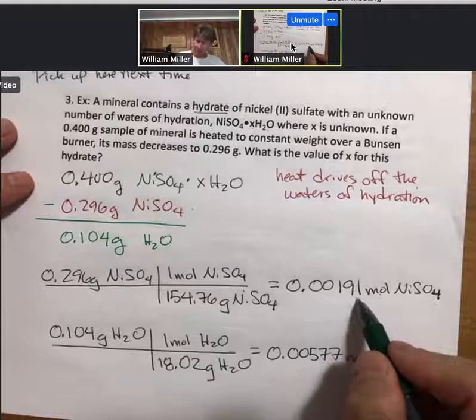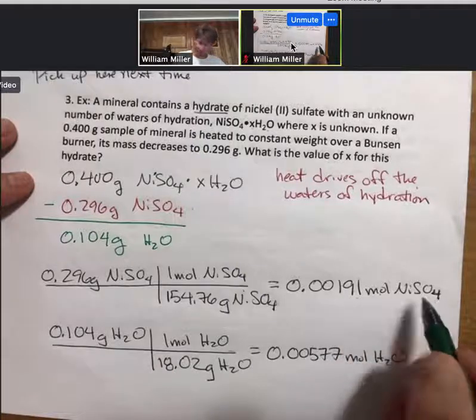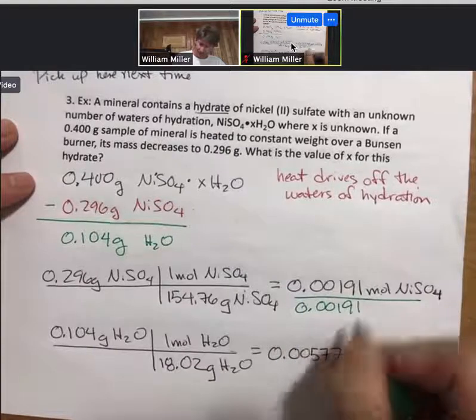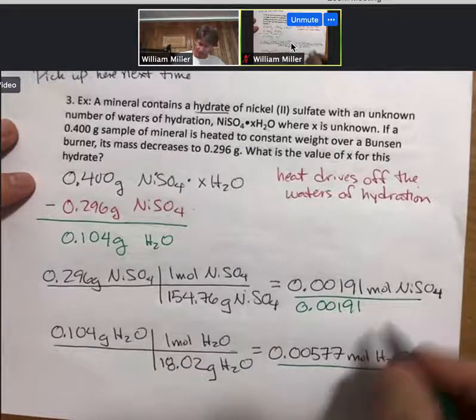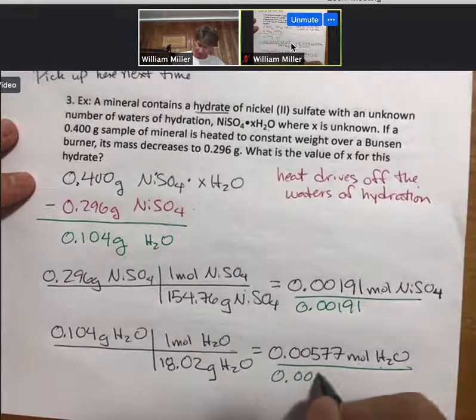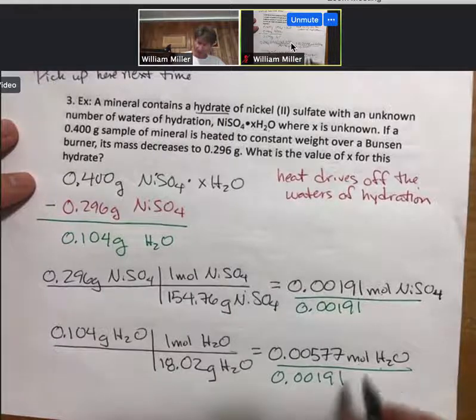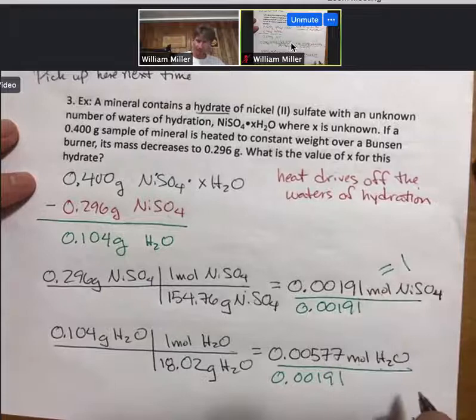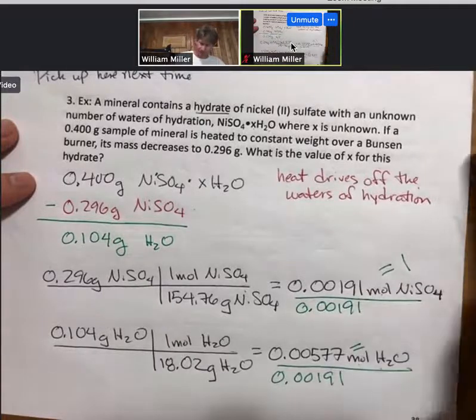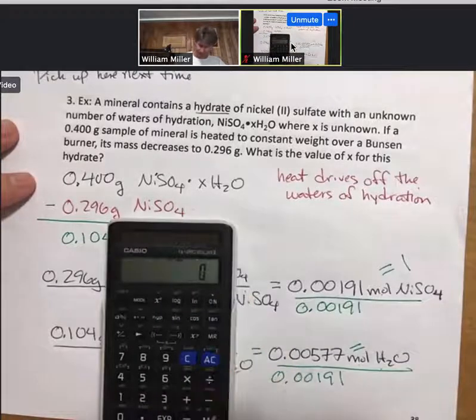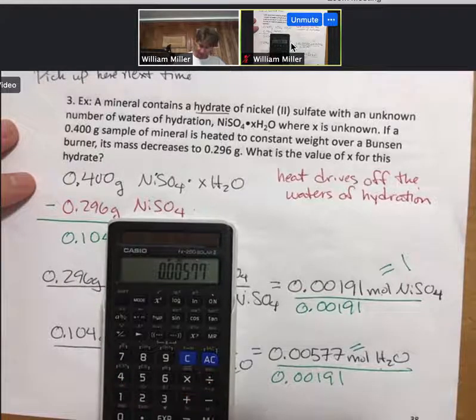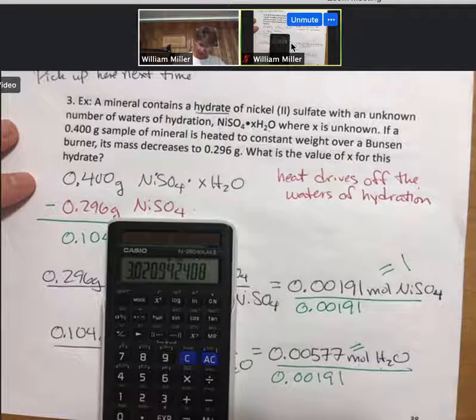The smaller number of moles is the moles of nickel 2 sulfate. So I'm going to divide through both of these by the moles of nickel 2 sulfate. And of course, for the top here, I'm just going to get one. And for the bottom here, 0.00577 divided by 0.00191, I get 3.02.